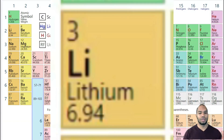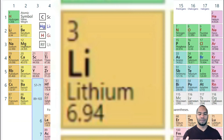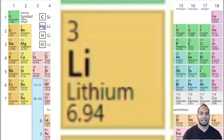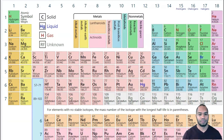If there are three protons already, how do you find the number of neutrons? All you have to do is subtract. Take the atomic mass, 7, and subtract 3. 7 minus 3 is 4. So there are four neutrons in lithium.